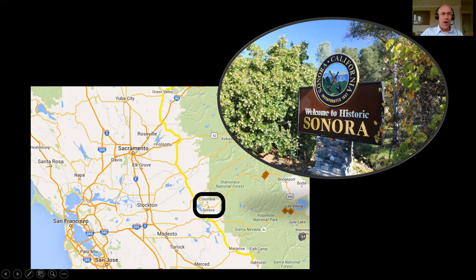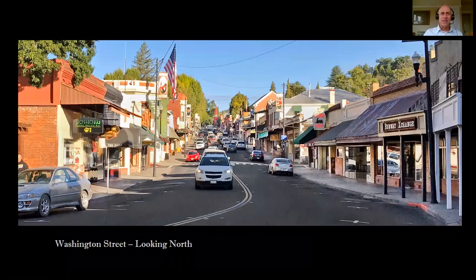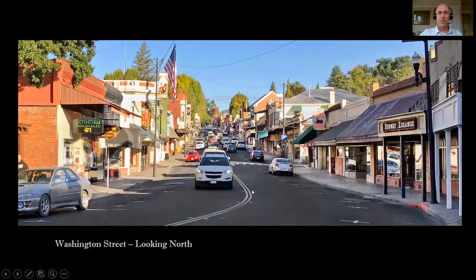The city of Sonora is about two hours due east of the San Francisco Bay Area. There are two other towns nearby: Columbia, which is another gold rush town that has become a state park, and Jamestown. These three are the southern cities of the Motherlode area. The city of Sonora was incorporated in 1851 — one year older than Oakland. It has a population of about 4,000 and is the county seat of Tuolumne County, which is where Yosemite National Park is.